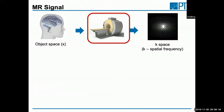A brief overview of what's happening inside the machine when we go from an object in image space to K-space: we need basically three different things. The nice thing about MRI is that these three things are actually in the name — MRI stands for Magnetic Resonance Imaging.